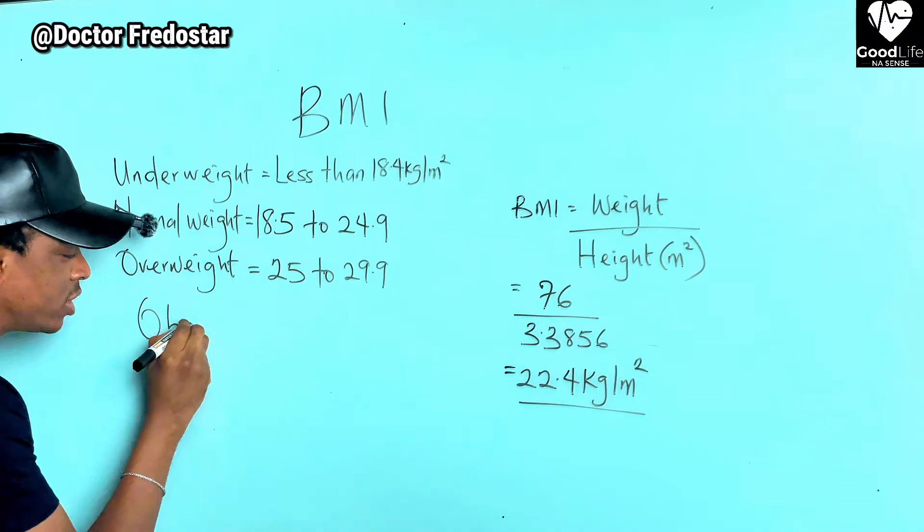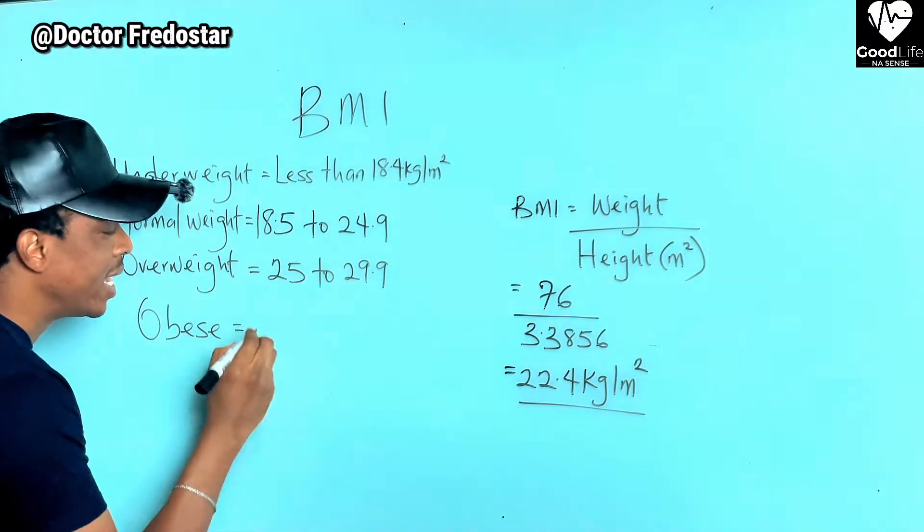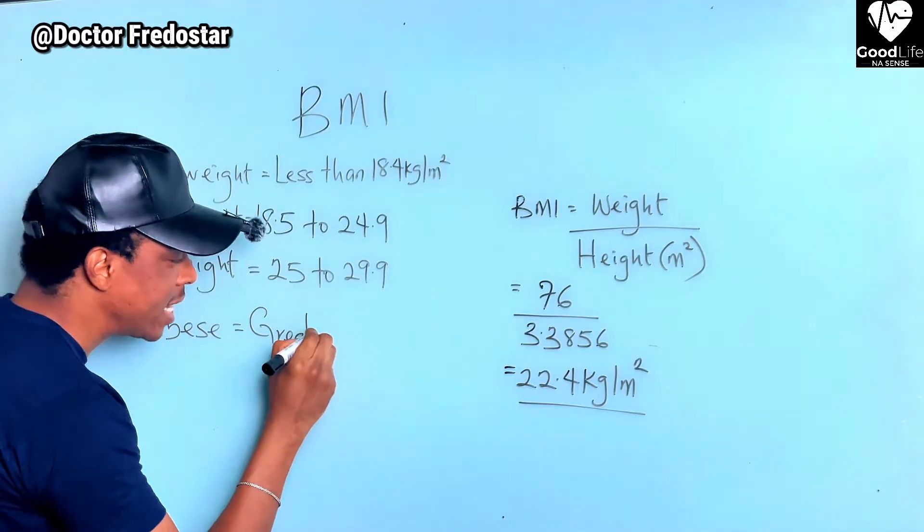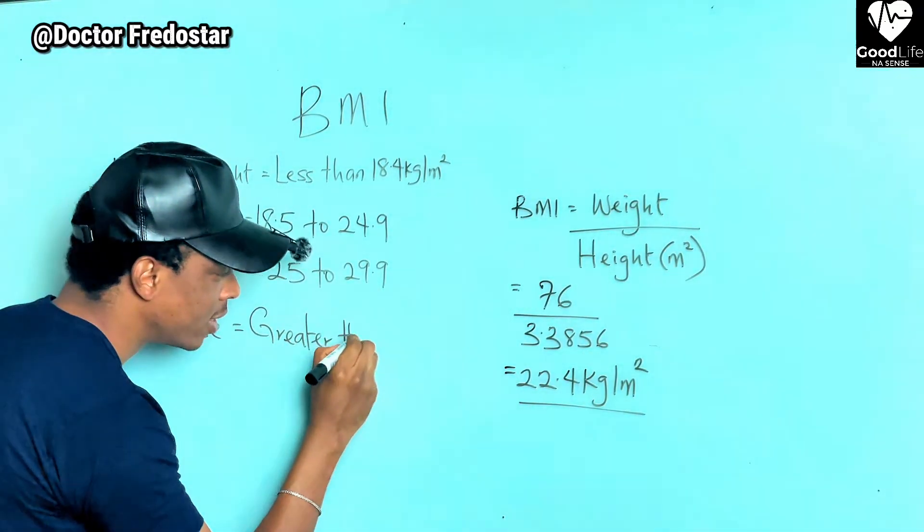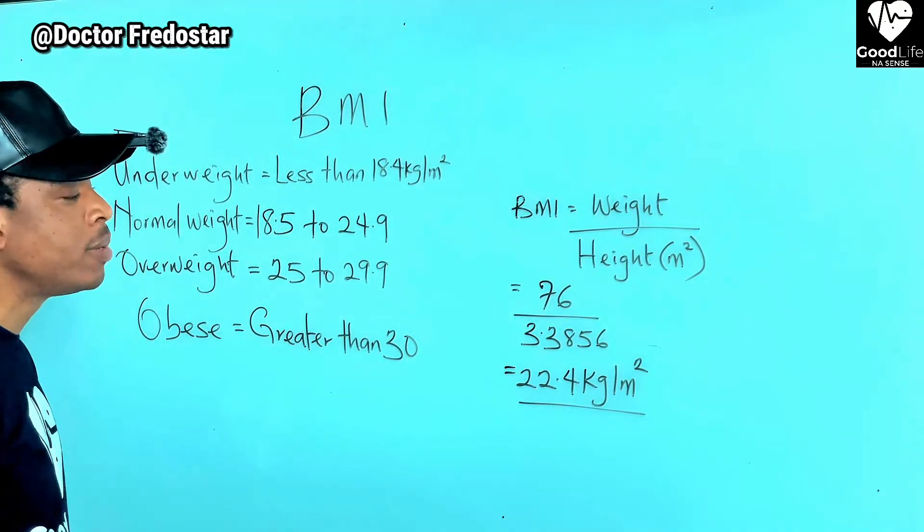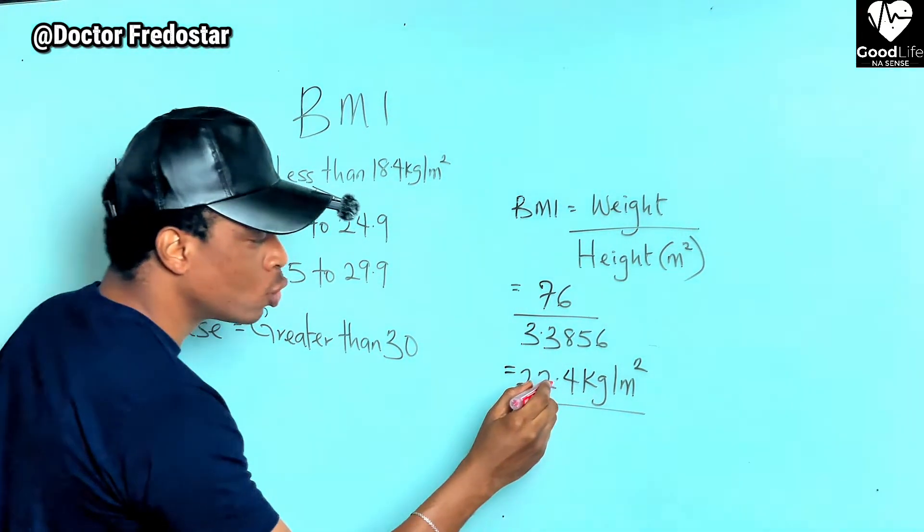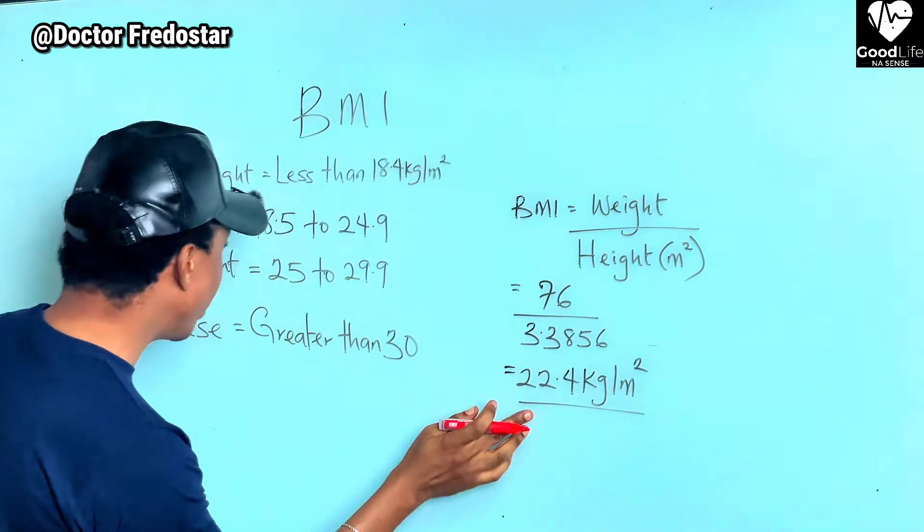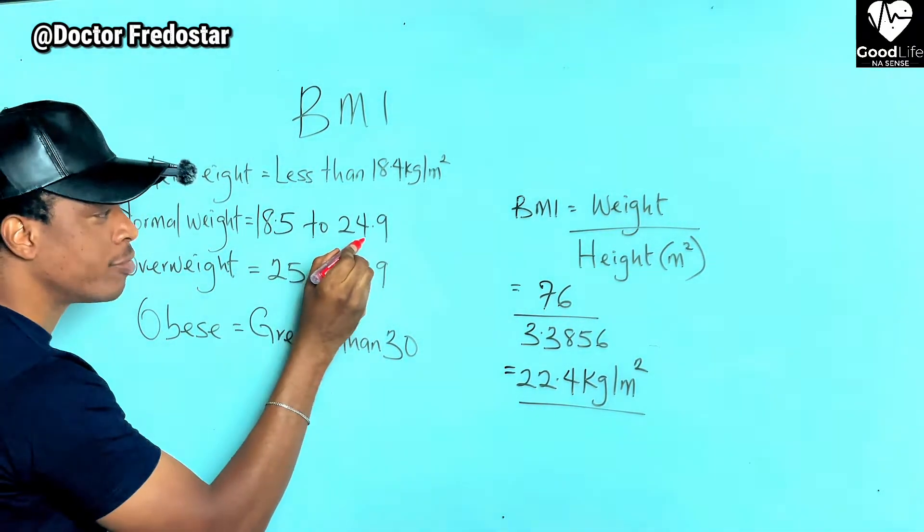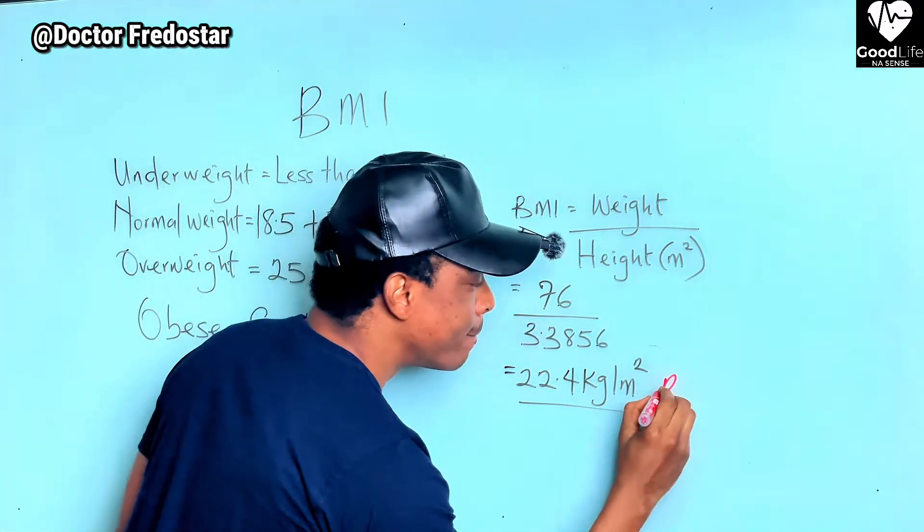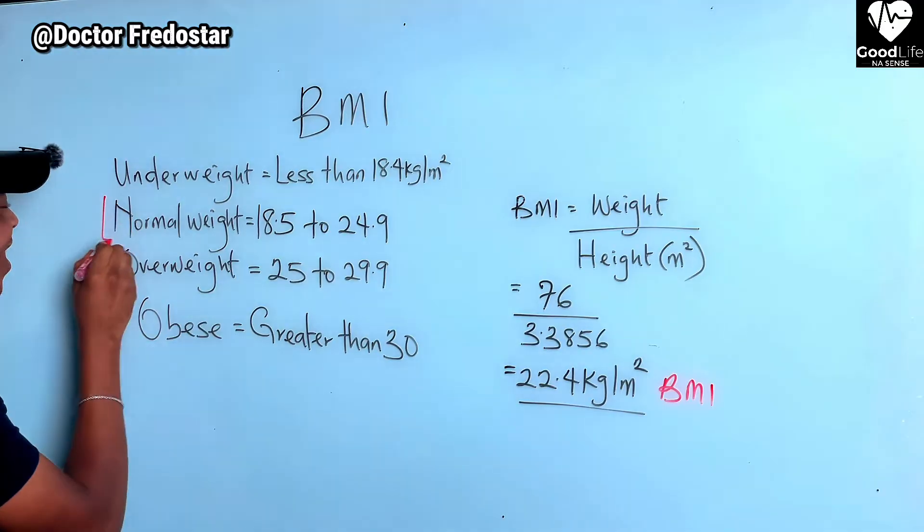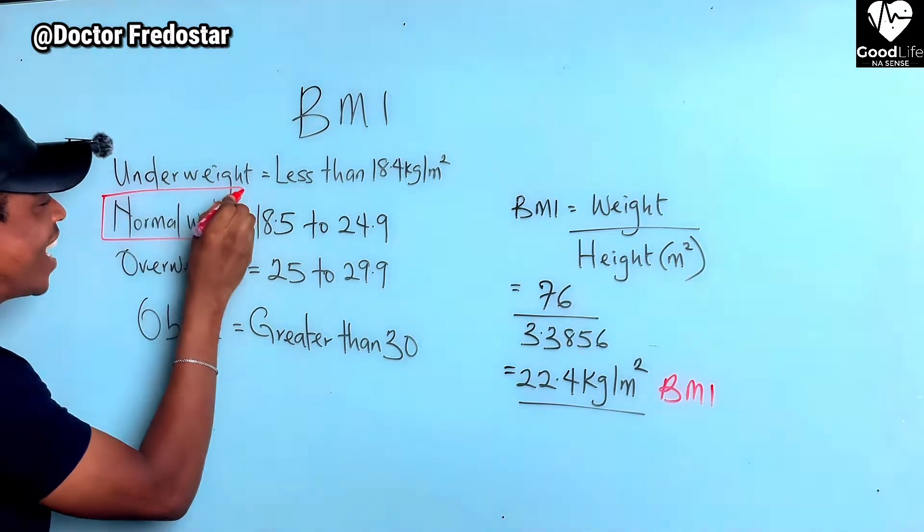If you're obese, your BMI is greater than 30. Now this one, this 22.4, this 22.4 is between 18.5 to 24.9. My BMI is what? Is normal. My BMI is normal.